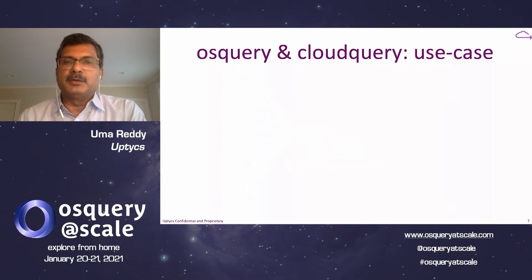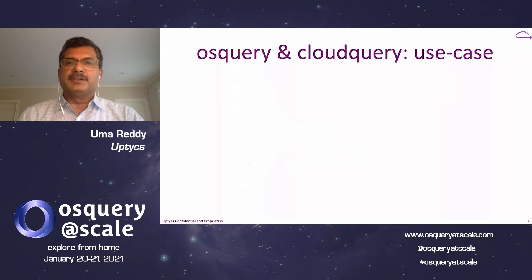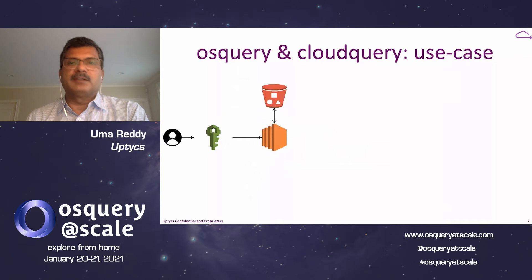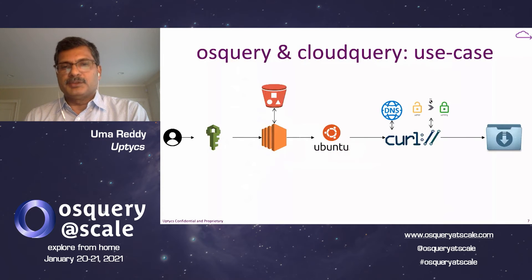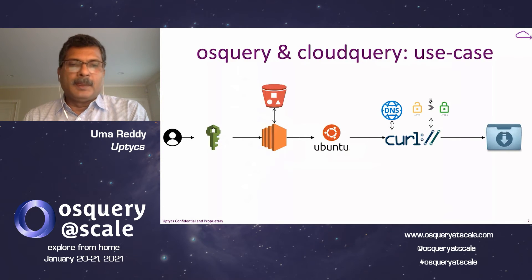Let me take you through a use case using data from OS Query and products like Cloud Query and Kube Query. Cloud Query collects data from cloud providers and feeds it into OS Query. In this example, an IAM user logs into AWS, creates an EC2 instance, and that EC2 instance has connectivity to an S3 bucket. When the virtual machine is launched, the AMI used has OS Query baked in, so OS Query launches and starts collecting data. If the user pulls down a data file from S3 and exports it using curl, and these are separate data sources in completely different formats, it would be very challenging to detect.